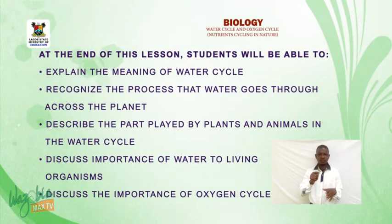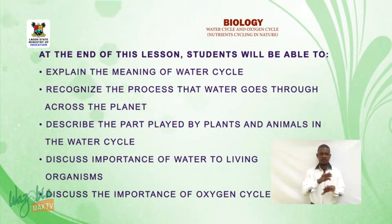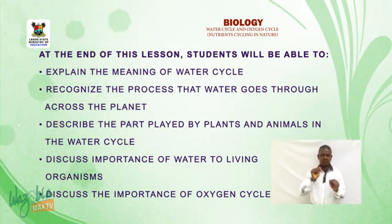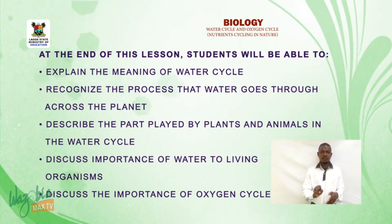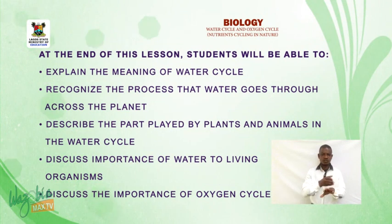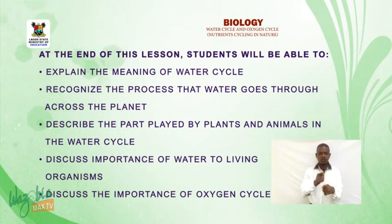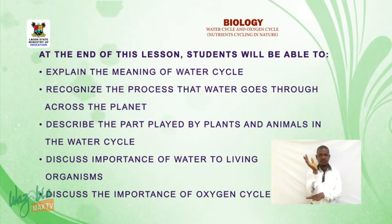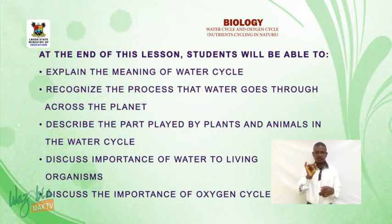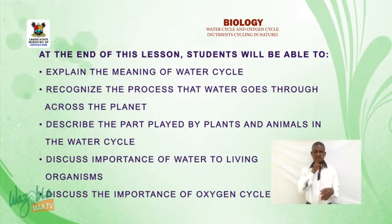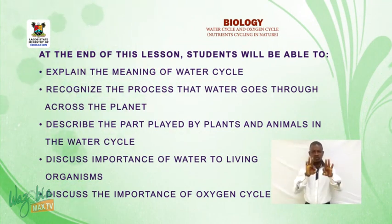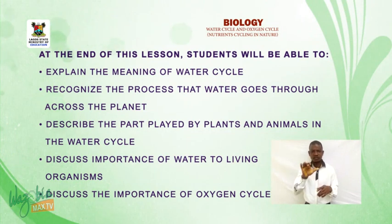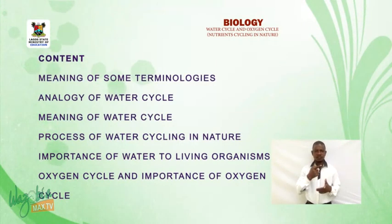Under nutrient cycling in nature. At the end of this lesson, students will be able to: explain the meaning of the water cycle, recognize the process that water goes through across the planet, describe the parts played by plants and animals in the water cycle, discuss the importance of water to living organisms, and discuss the importance of the oxygen cycle. Now let us enjoy the lesson together.